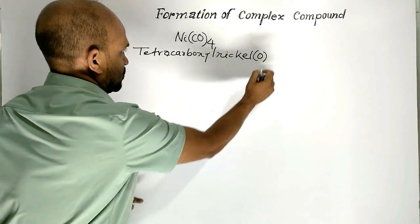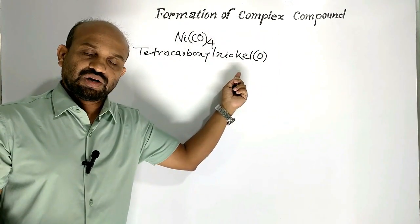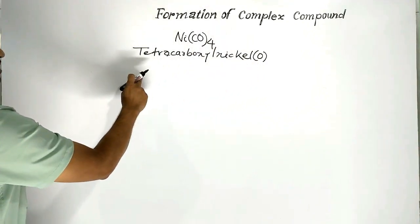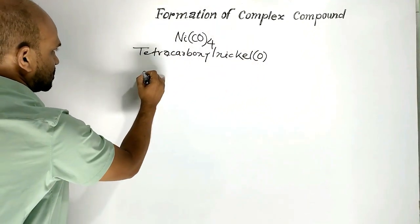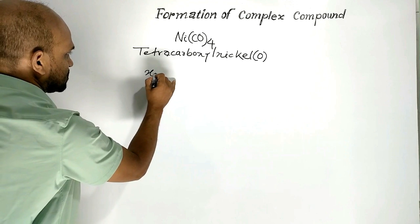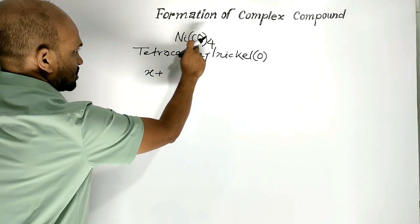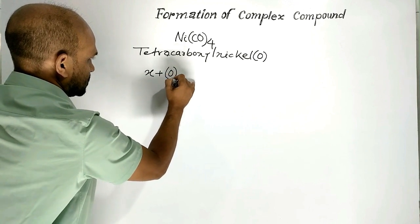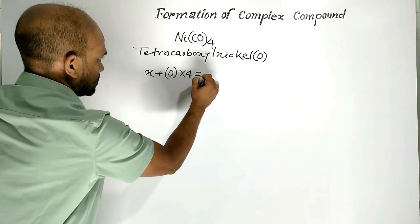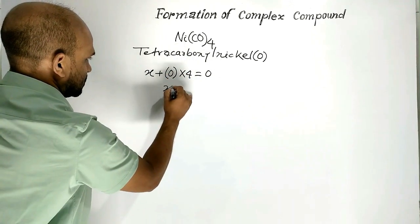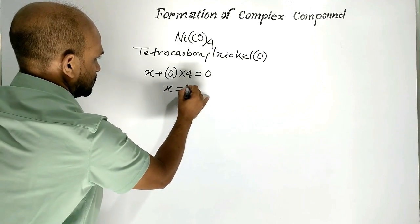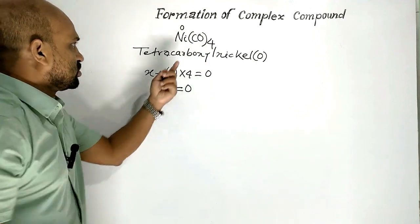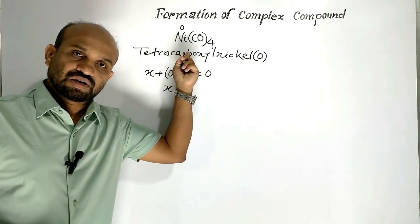The oxidation state shown is zero — tetracarbonyl nickel(0). Why zero? Let us see: the oxidation number of nickel is X, and carbon monoxide is a neutral ligand, so its oxidation number is zero. Therefore X plus zero equals zero, meaning X equals zero. The oxidation number of nickel is zero in tetracarbonyl nickel.